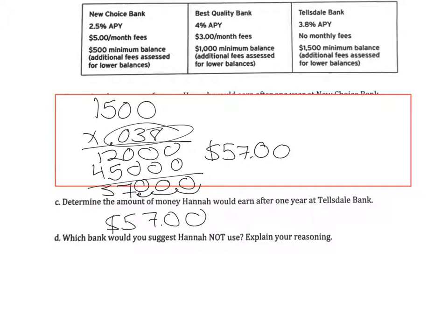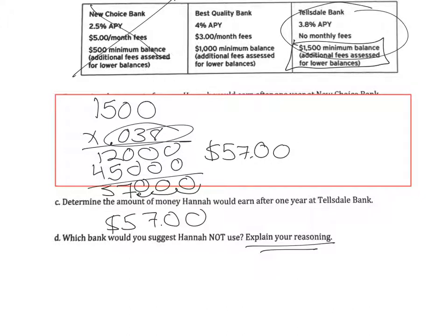The last question asks which bank should Hannah choose. A lot of people might say Tellsdale Bank because you get a greater APY, but be careful — she only has $1,500 and if she goes below that minimum she'll get charged. You wouldn't pick New Choice because you'd be in the negative. Best Quality Bank might be the safest choice. As long as you explain your reason, it doesn't matter which you pick except for New Choice, because you're not making any money there.